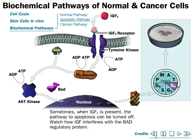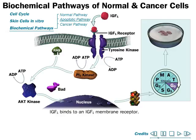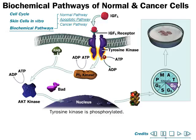Sometimes, when IGF is present, the pathway to apoptosis can be turned off when needed. Watch how IGF interferes with the Bad regulatory protein. When IGF binds to the IGF membrane receptor, tyrosine kinase is phosphorylated with the help of this binding.